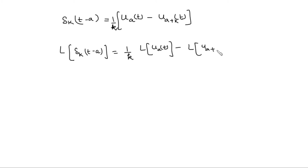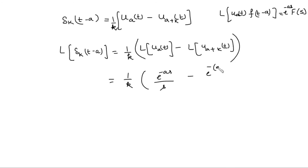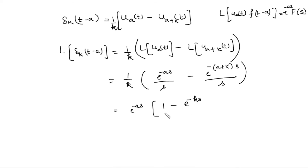We can find the Laplace of this function. Taking the constant outside, it is one over k times the Laplace of unit step at a minus the Laplace of unit step at a plus k. Applying the second shifting theorem — the Laplace of unit step at a times f(t minus a) equals the Laplace of f times e to the power minus as — and since f is 1, the Laplace of 1 is 1 over s. So this becomes e to the power minus as over s, minus e to the power minus (a plus k)s over s, and taking e to the power minus as common, we get e to the power minus as times (1 minus e to the power minus ks), all over k times s.